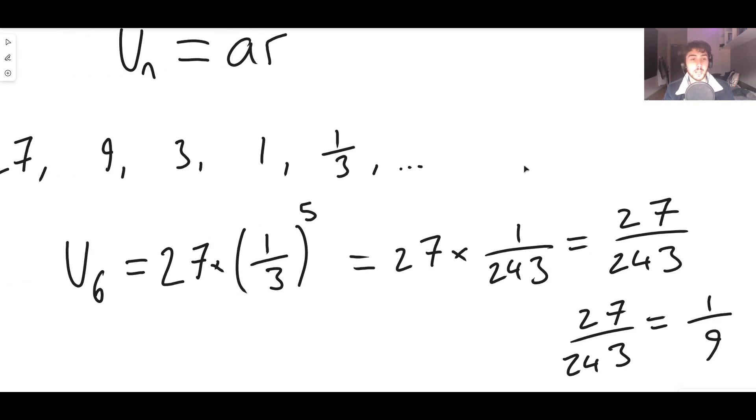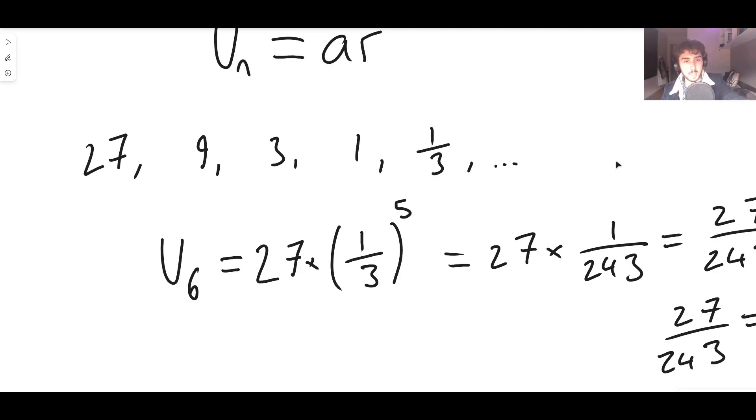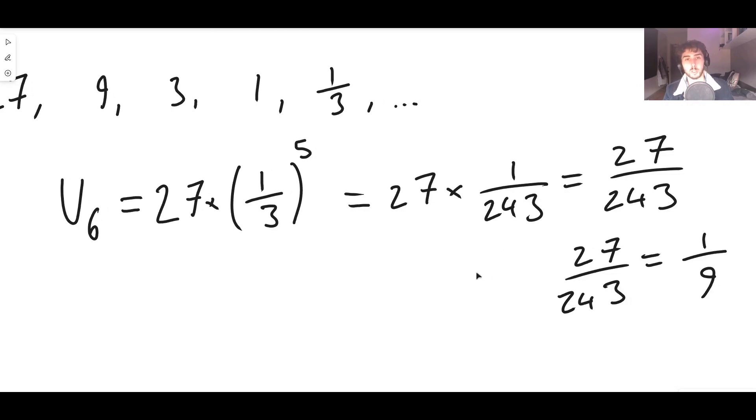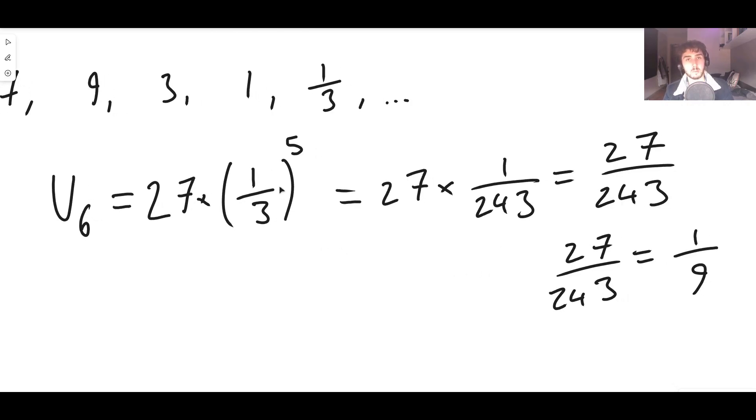Therefore that, and it checks out, right? Because we can see clearly that the sixth term would be a ninth. And the formula is agreeing with us. So that is where the formula for the nth term of a geometric sequence comes from. And it's also how to use it.